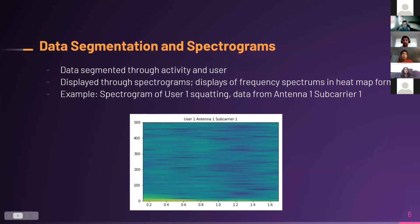Moving on to the frequency domain. As stated earlier, the data is gathered through antennas and sub-carriers, which allows for easy segmentation. The data is also different for each activity and user for separation. The frequency domains are displayed through spectrograms in heat map format. For example, we have the image shown, which is a spectrogram of user one doing squatting, and the data is gathered from antenna one sub-carrier one. While they may be hard to differentiate to us, they are still different enough to be a significant source for our machine learning model as a counterpart to the time domain inputs.